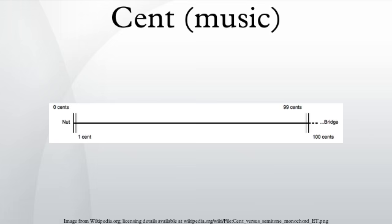Play middle C and one cent above, beat frequency equals 0.16 hertz. Play middle C and 10.06 cents above, beat frequency equals 1.53 hertz. Play middle C and 25 cents above, beat frequency equals 3.81 hertz.